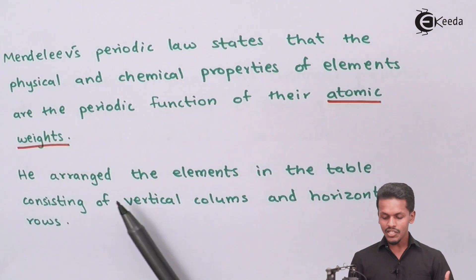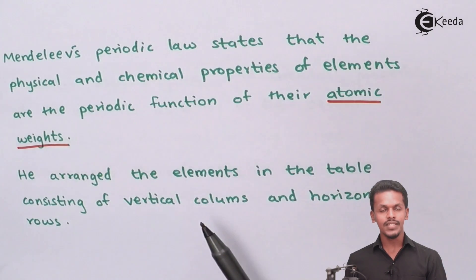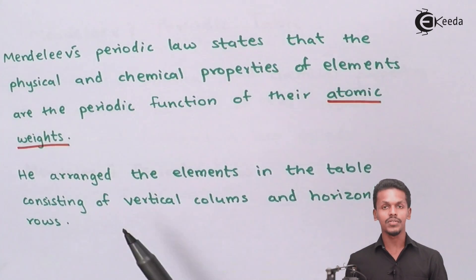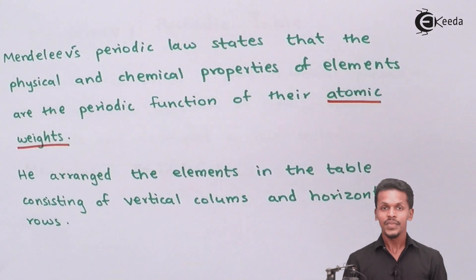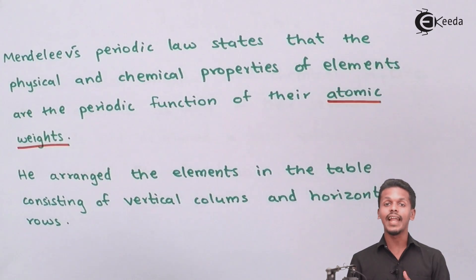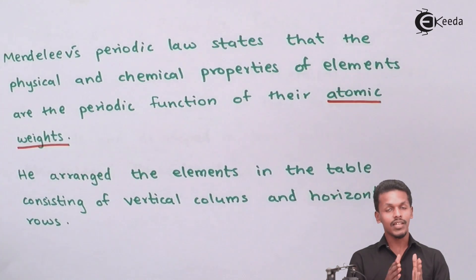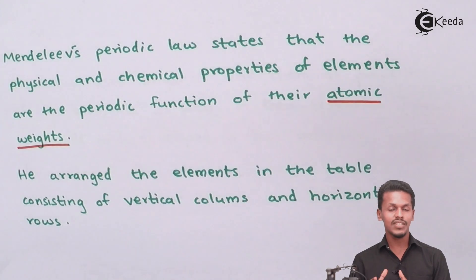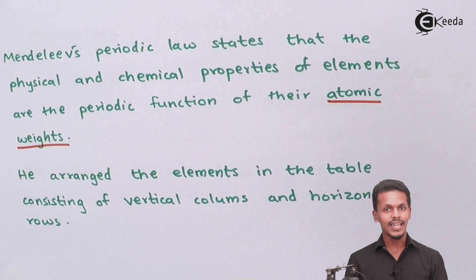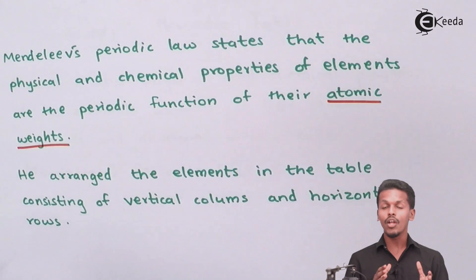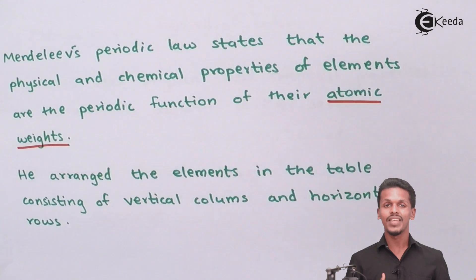He arranged the elements in a table consisting of vertical columns, basically known as groups, and horizontal rows, basically known as periods. He was the first one to arrange elements in this manner — having similar properties within a group, and variations with respect to atomic weight across the rows, that is, across the periods. He made a great contribution in the formation of the periodic table.